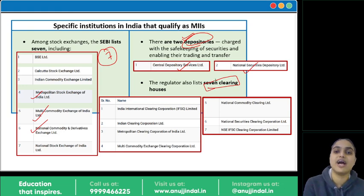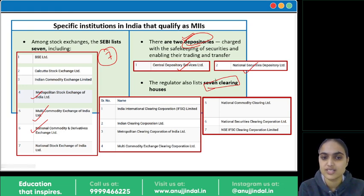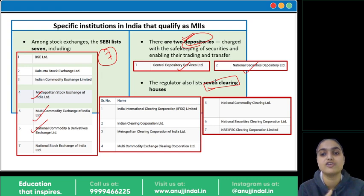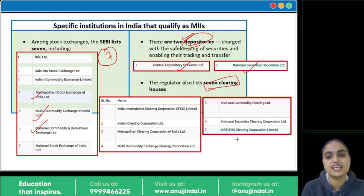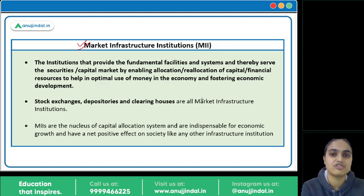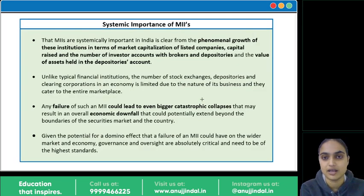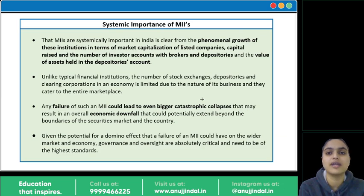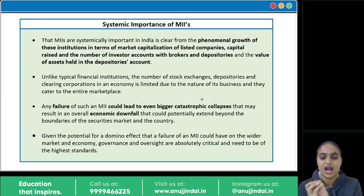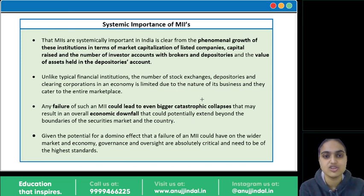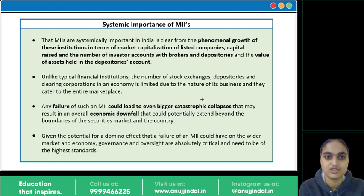These seven clearing houses are Market Infrastructure Institutions. Now let's talk about why they are systemically important. Taking a simple example: if I talk about a stock exchange, there are a large number of investors, a lot of money being invested. Various companies are raising funding through them, there is large market capitalization of listed companies, and a lot of funding is raised. This shows how important these MIIs are.